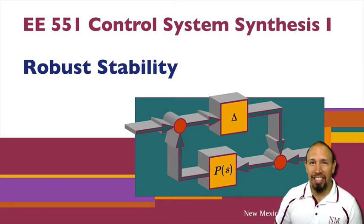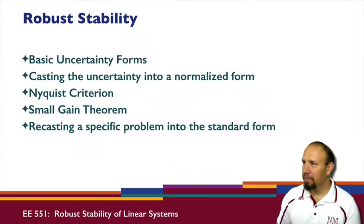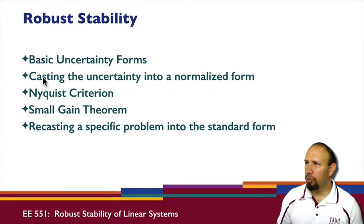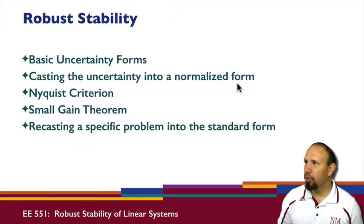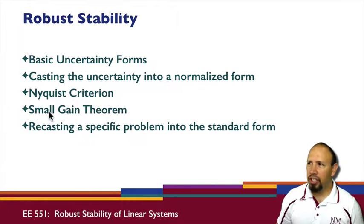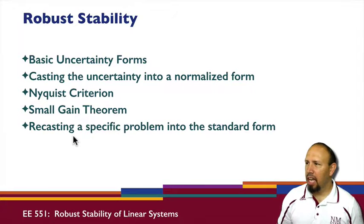In this topic, we're looking at the subject of robust stability. There are a number of things we're going to look at in this process — not all will be in this lecture. We're going to talk about basic uncertainty forms, about casting uncertainty into a normalized form. We'll look at how the Nyquist criteria and small gain theorem relate to robust stability, and then recasting a specific problem into the standard form.